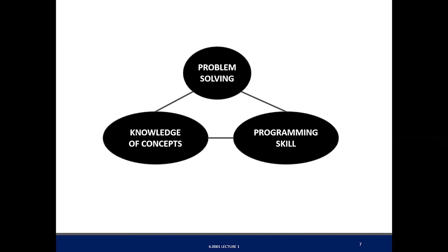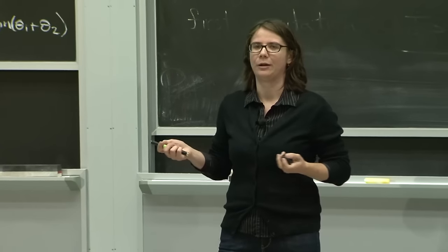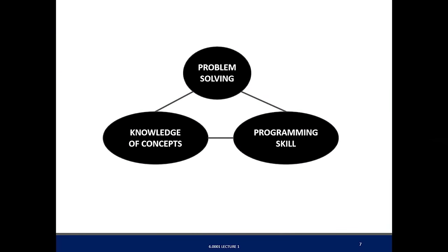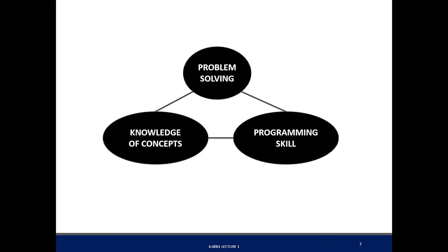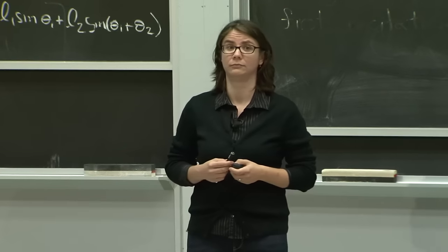This is a roadmap of 6.001. There are three big things we want you to get out of this course. The first is knowledge of concepts, which lectures cover and exams test. The second is programming skills. And the third — what makes this class really great — is we teach you how to solve problems, and we do that through the p-sets. Underlying all of these is just practice: you have to code a lot.